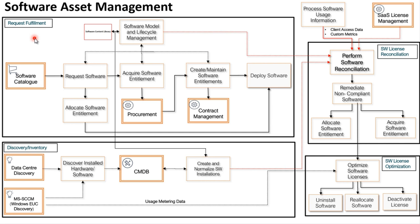Let's say you need to install Microsoft Visio on your laptop. You'll first need to raise a request for the specific software from your service catalog. The request may have an approval or fulfillment process depending on your customer. If your company has the required license, the software asset managers can allocate the license to your name and then install it on your device.